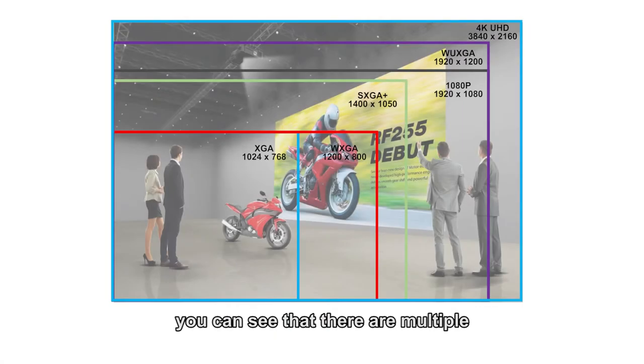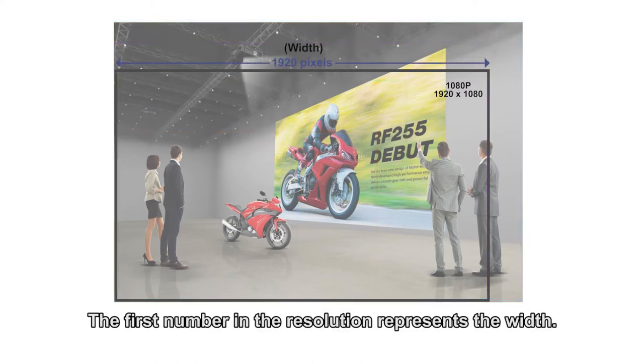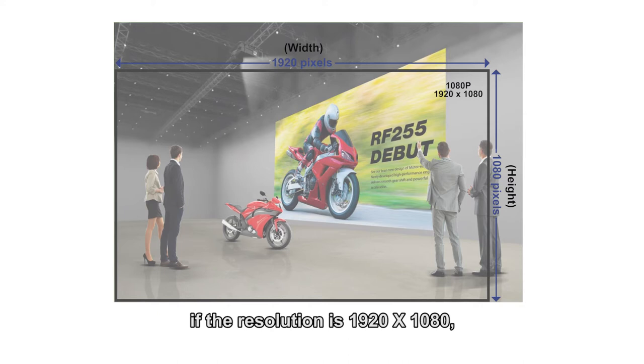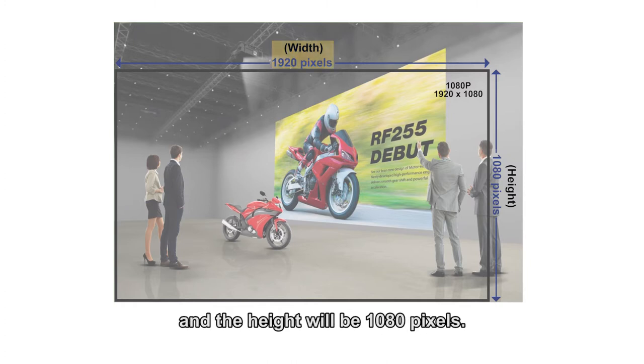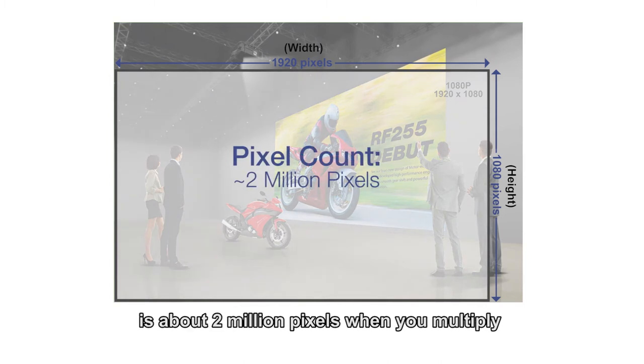From this chart you can see that there are multiple projection resolutions available in the market. The first number in the resolution represents the width times the second number which is the height. For example, if the resolution is 1920x1080, the width is 1920 pixels and the height will be 1080 pixels. And the total pixel count on screen is about 2 million pixels when you multiply both of them together.